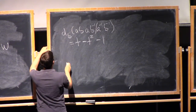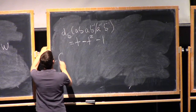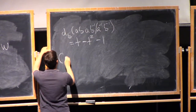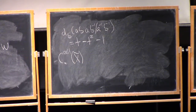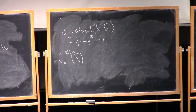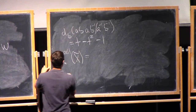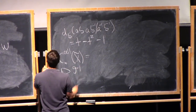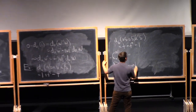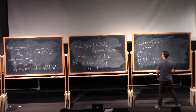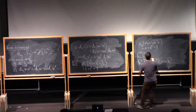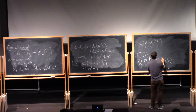So, the chain complex C-star of X-tilde, where X is something homotopy equivalent to this, is going to look like R^(G−1) — one 2-cell for each relation — going to R^G, then one 1-cell for each generator going to R, and one 0-cell. This matrix I'll call A, and this matrix I'll call B.